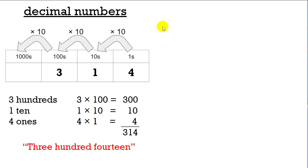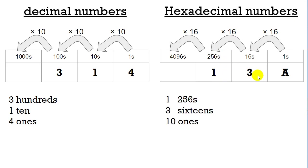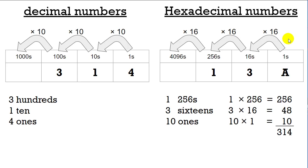But what about hexadecimal numbers? Here's how they work. Here are the ones, here are the sixteens, here are the two-hundred-fifty-sixes, and here are the four-thousand-ninety-sixes. To get from one place to the next, you multiply by sixteen. We have one of these, three of these, and ten (remember A is ten) of these ones. That gives us three hundred fourteen — you could write it as 1-3-A in hex for three hundred fourteen.